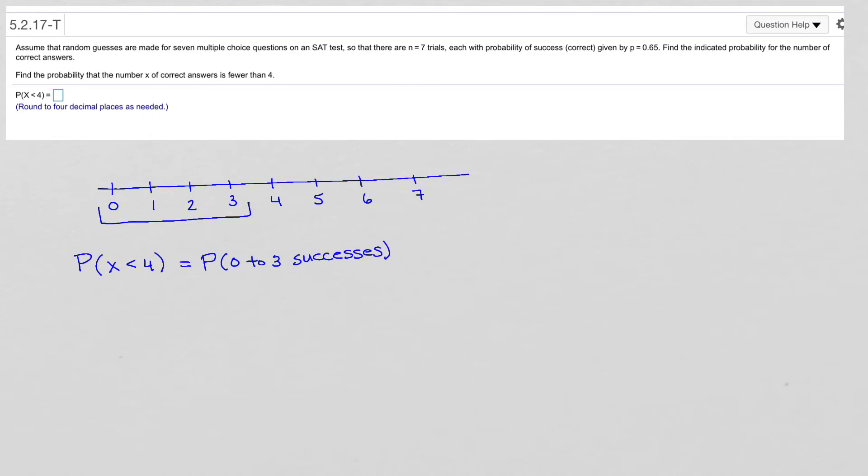we're going to use the binom CDF function. The C is for cumulative, so that means that we're starting at zero, and we're going to add together all the probabilities starting at zero, going up to whatever our max number is, which in this case is three. Because it said strictly less than four, so four is no good.